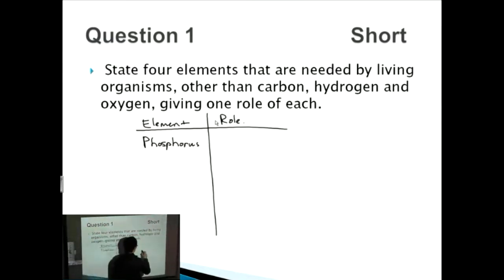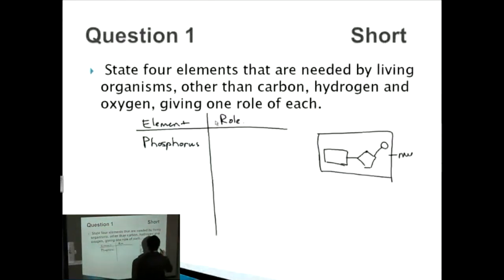So we can quickly draw this on the side. We've got our nitrogenous base here, which is given by the rectangle, as well as the ribose, and then attached to here is the phosphate, and this is a nucleotide. So phosphorus is found in DNA or the genetic code.